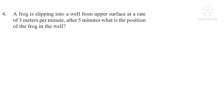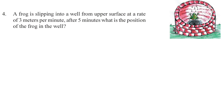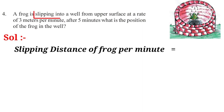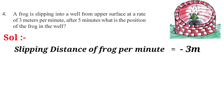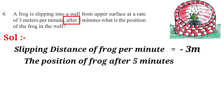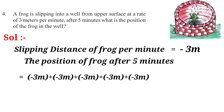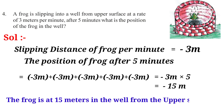Question 4: A frog is slipping into a well from the upper surface at a rate of 3 meters per minute. After 5 minutes, what is the position of the frog in the well? Solution: The slipping distance per minute is minus 3m (slipping into indicates a negative direction). After 5 minutes — 'after' indicates repeated addition, that is minus 3m multiplied by 5 equals minus 15m. So the frog is at 15 meters deep in the well from the upper surface.